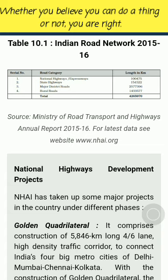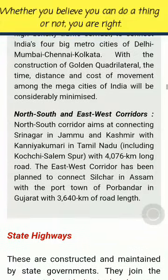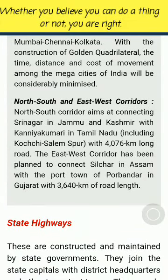National Highways Development Projects: NHAI has taken up some major projects under different phases. The Golden Quadrilateral comprises construction of a 5,846 km long 4/6-lane high-density traffic corridor to connect India's four big metro cities of Delhi, Mumbai, Chennai and Kolkata. With this, the time, distance and cost of movement among these mega-cities will be considerably minimized. The North-South corridor aims at connecting Srinagar with Kanyakumari (including Kochi-Salem spur) with a 4,076 km long road. The East-West corridor has been planned to connect Silchar in Assam with Porbandar in Gujarat with 3,640 km of road length.